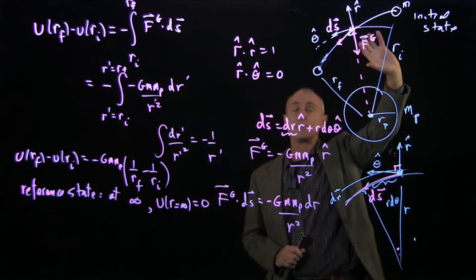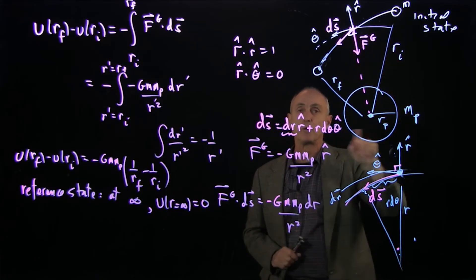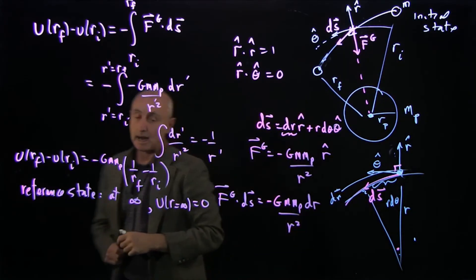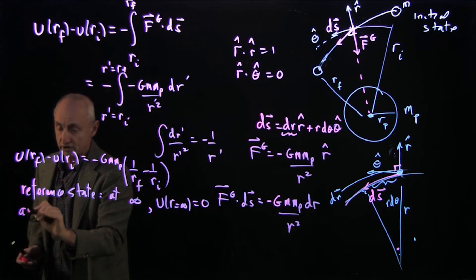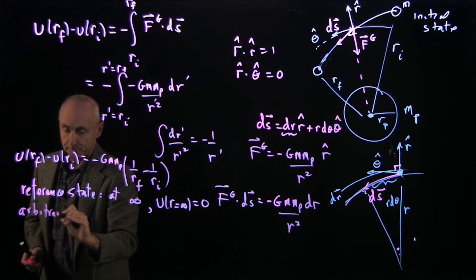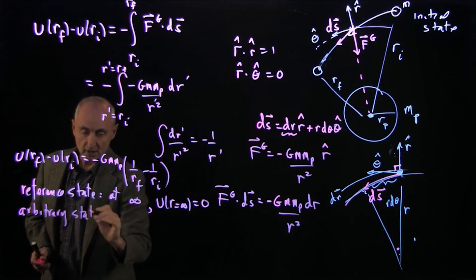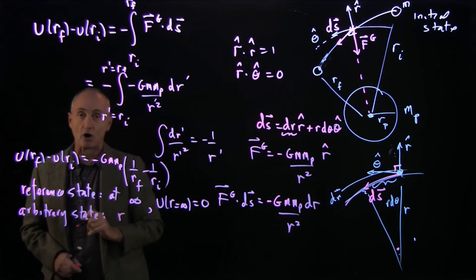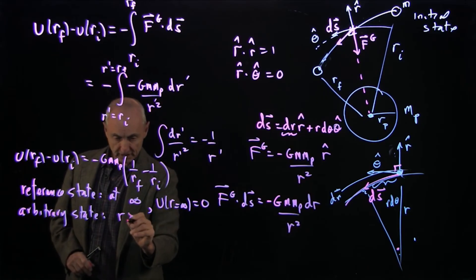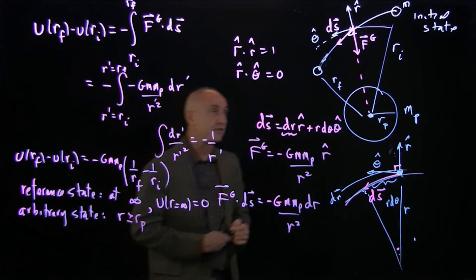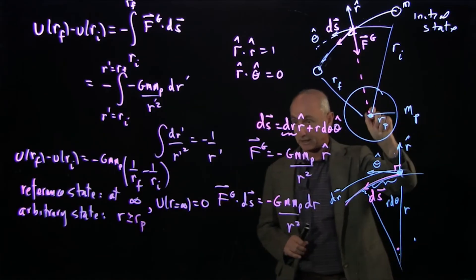That means when our imagined initial state is very, very far away from the planet. And we'll take as a final state, an arbitrary state, just where the object is some distance r from the planet. Now, we have to be a little bit careful, because in this calculation, our final state must always be outside the planet.